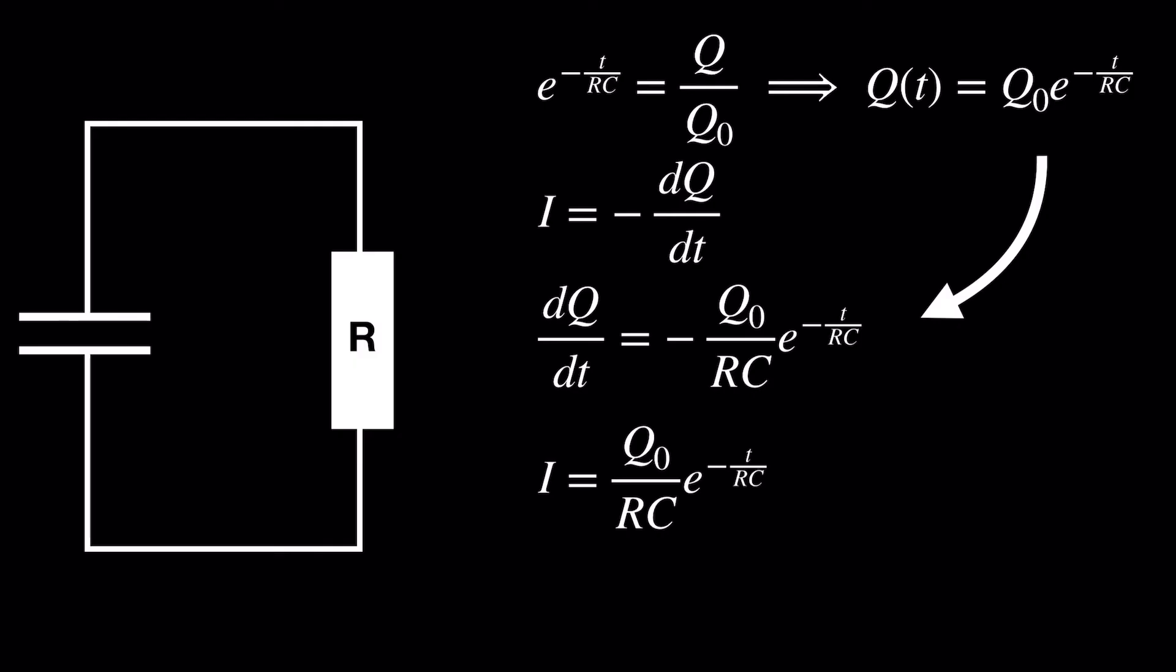Then, consider the case when t equals 0. At t equals 0, i equals Q0 over RC, because e to the 0 is 1. Therefore, Q0 over RC is i0. These are both useful forms of the equation, so let's box them both up.